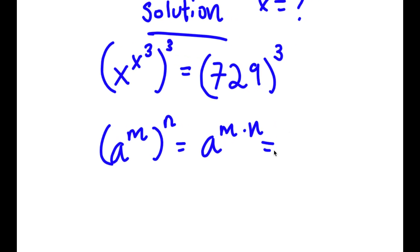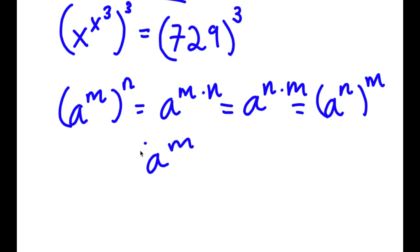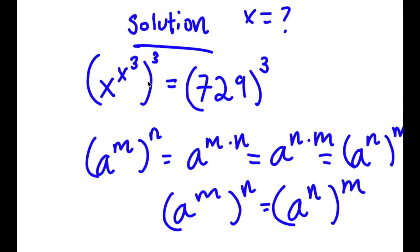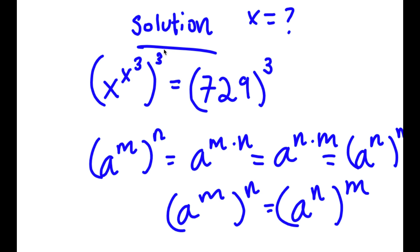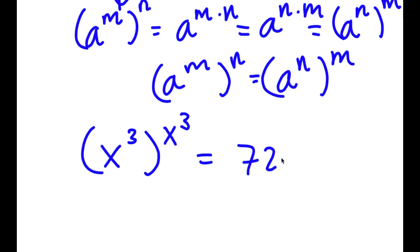For a to the power of m times n, this is the same as a to the power of n times m. Meaning a to the power of m to the power of n equals a to the power of n to the power of m. So here, x to the power of x to the power of 3 to the power of 3 — thinking of x to the power of 3 as m and 3 as n — becomes x to the power of 3 to the power of x to the power of 3, equal to 729 to the power of 3.